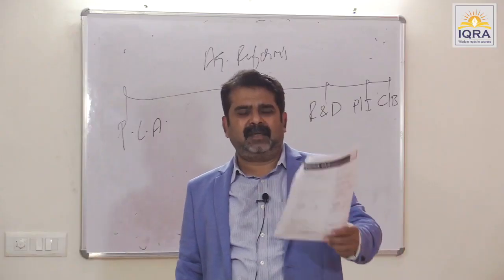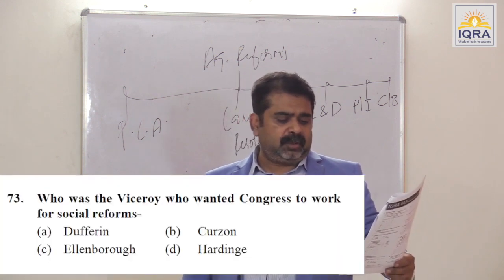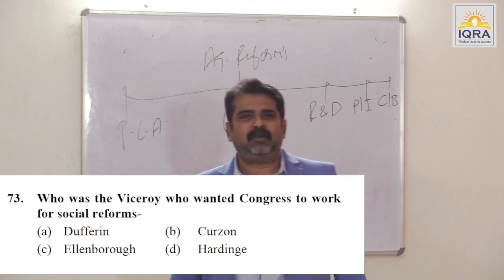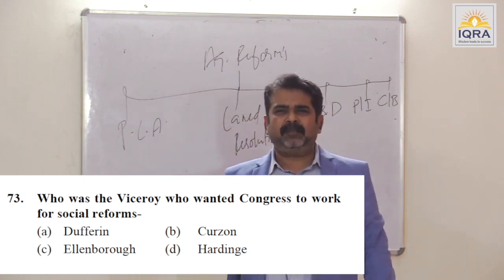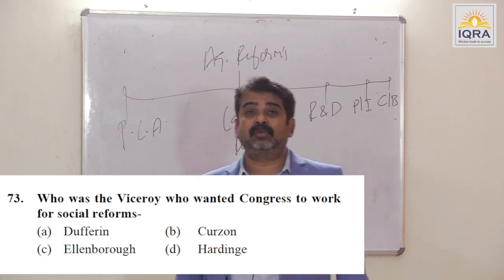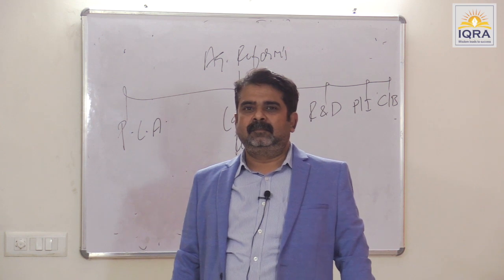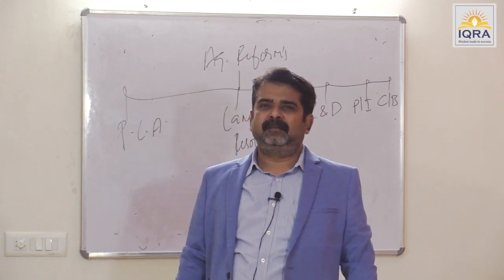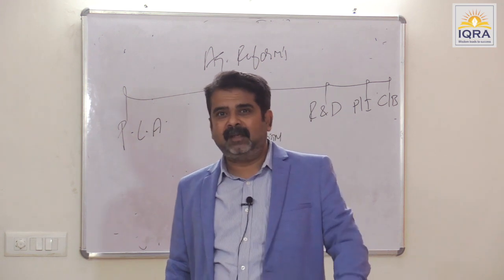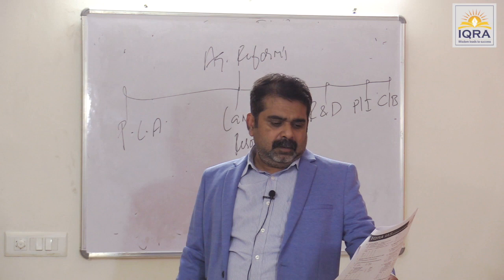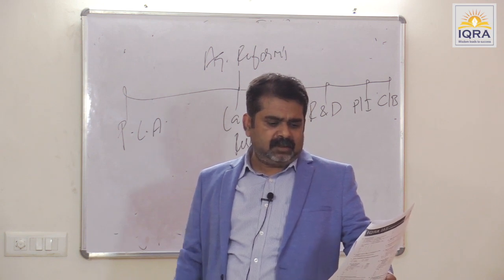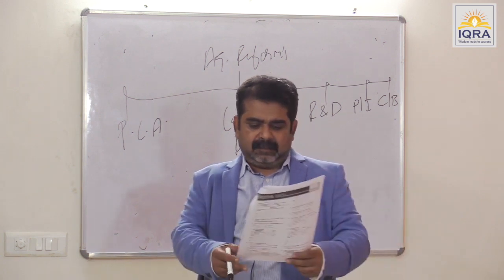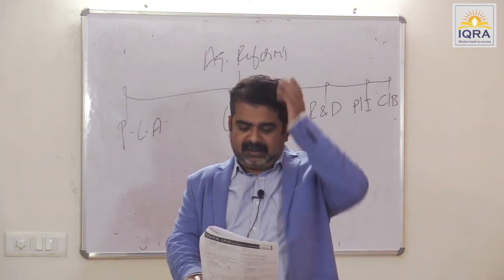Who was the Viceroy who wanted Congress to work for social reforms? Dufferin — in 1885 when Congress was formed, he gave a tea party to initial delegates and proposed that Congress should work for social reforms, which was also proposed by B.M. Malabari in his newspaper The Spectator, but opposed by A.O. Hume. Dufferin called Congress a 'microscopic minority.' Answer is D. Important events: Lord Harding — Gandhiji arrived in India; Jallianwala Bagh. Reading — civil service exam centre in Delhi and London. Lord Irwin — Royal Commission for Agriculture. Answer is A.